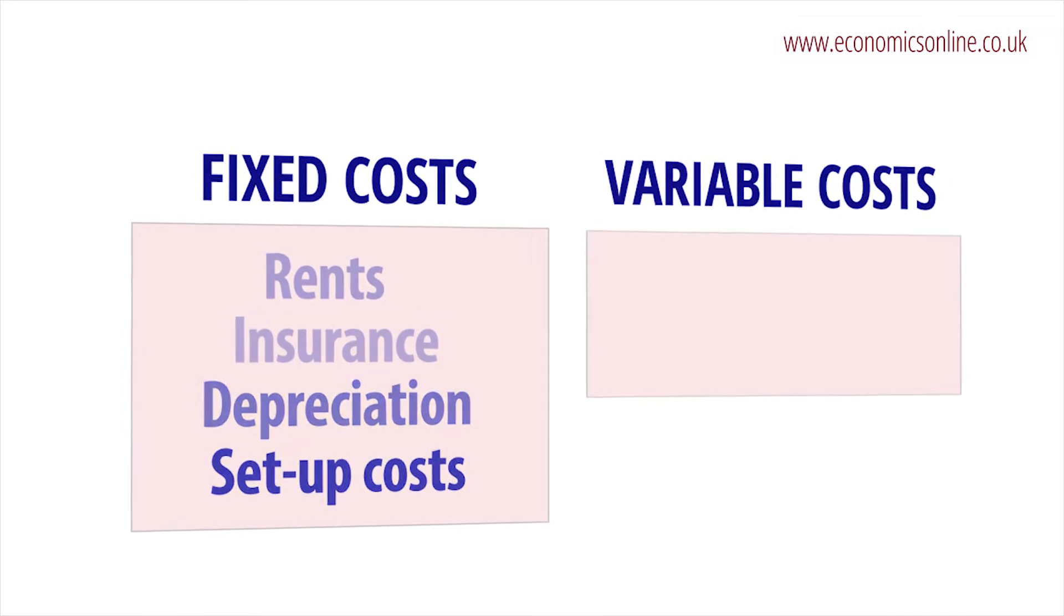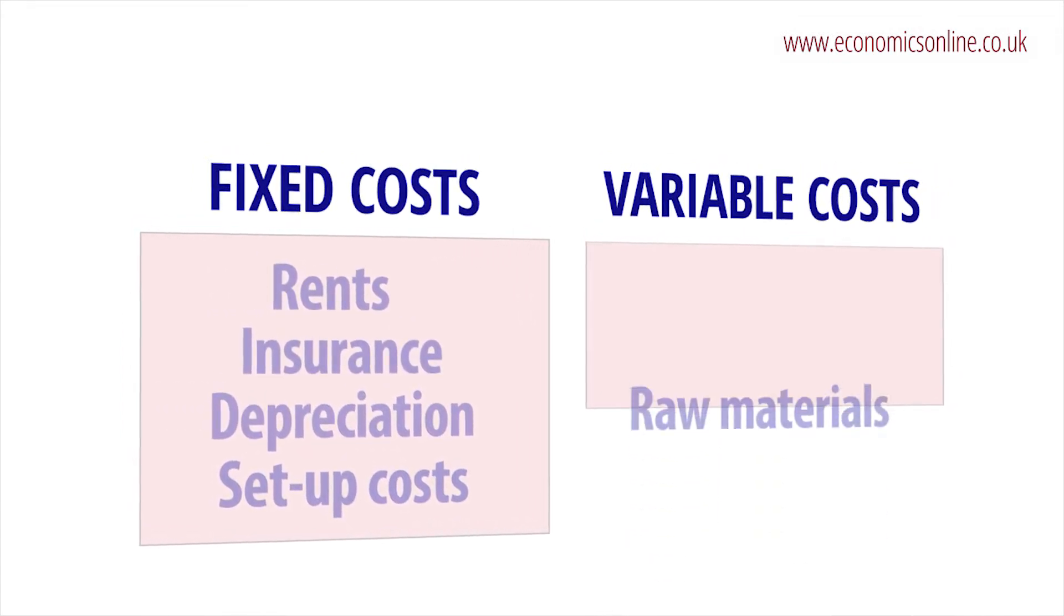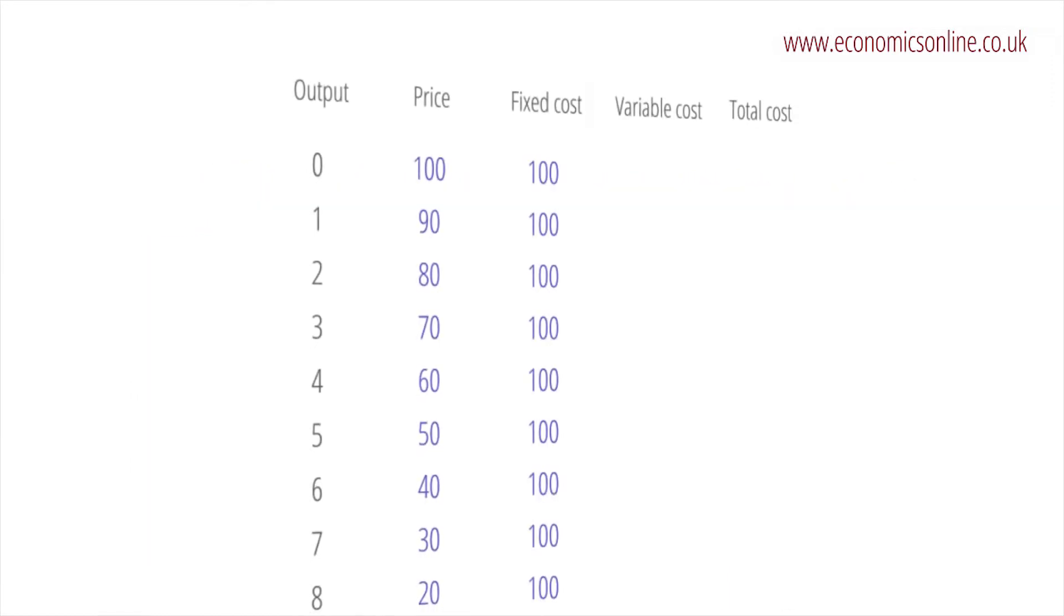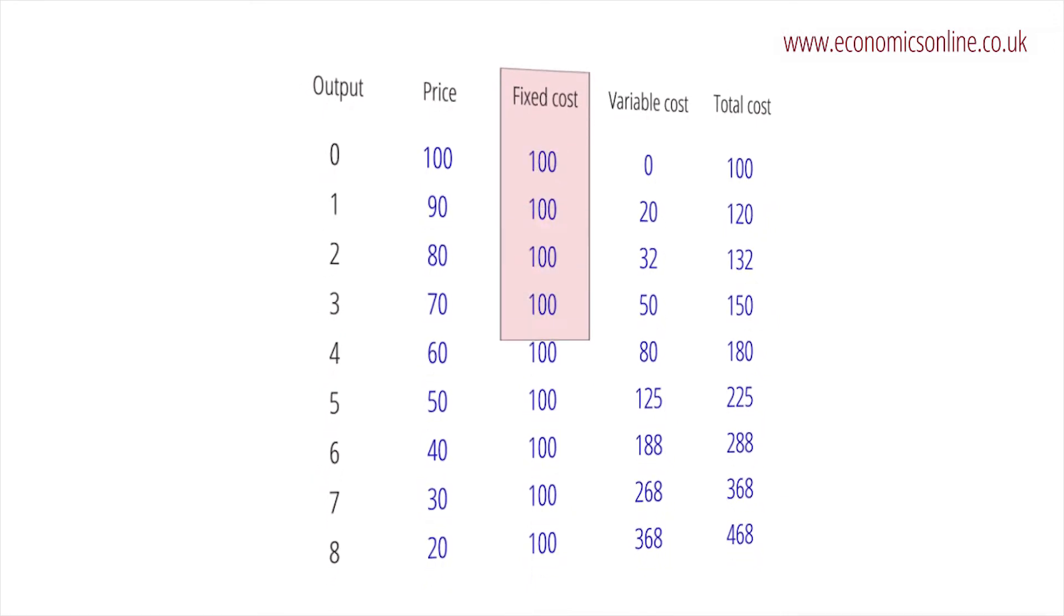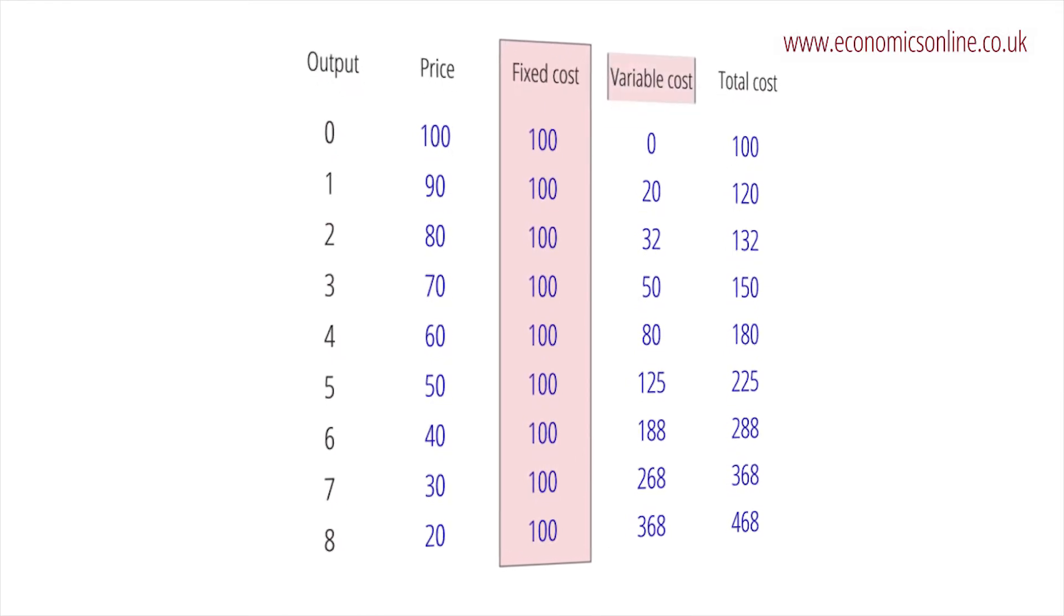Variable costs, also called direct costs, are those that do vary with output and include raw materials and some labour costs. The costs shown here are for a firm making robotic manufacturing systems. Fixed costs are constant at £100,000. Its direct variable costs rise as output increases.